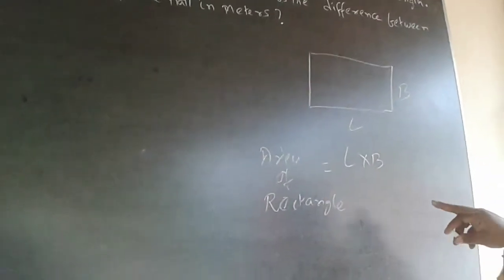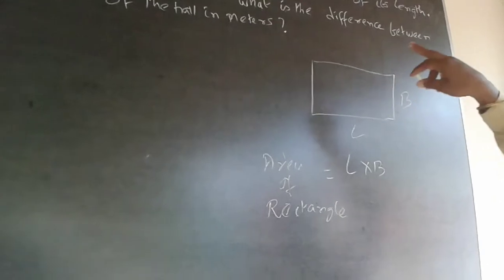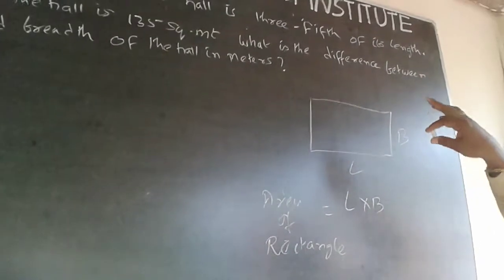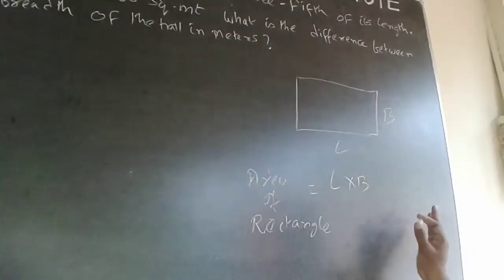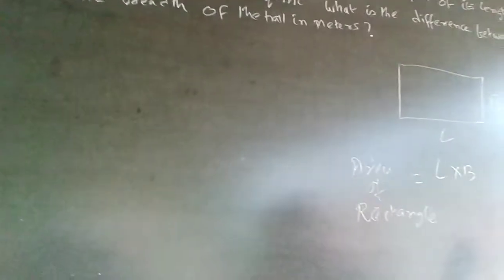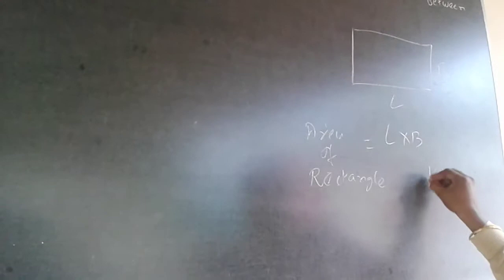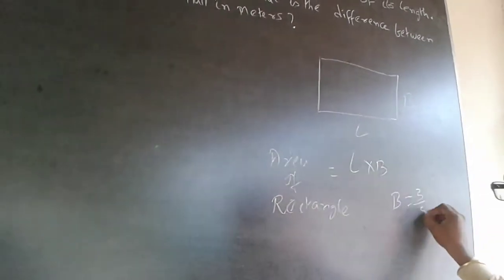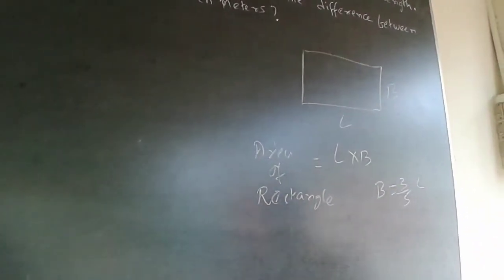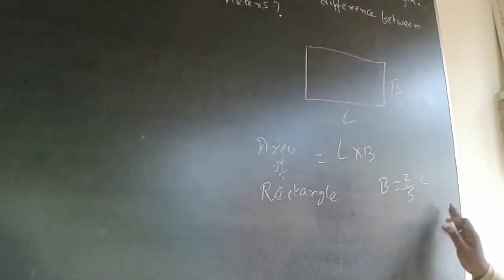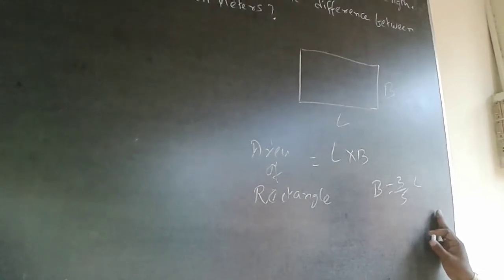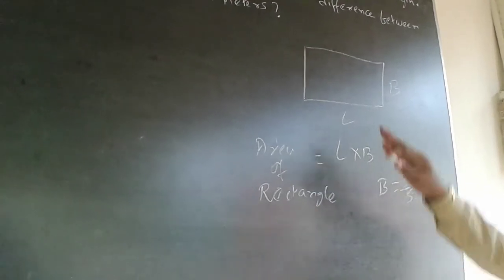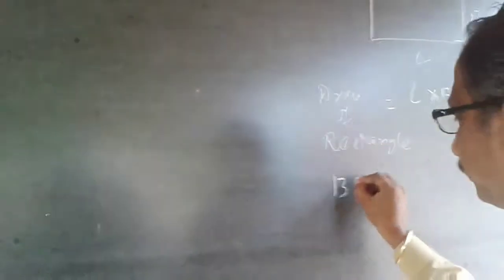The area is given as 135, and they also said that the breadth is three-fifths of the length. So B will be equal to three by five of L. Now substitute the values.